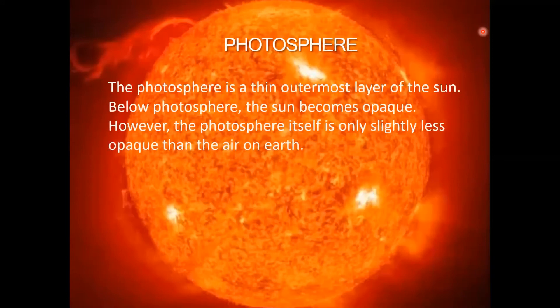Photosphere: the Photosphere is a thin outermost layer of the Sun. Below the Photosphere, the Sun becomes opaque. However, the Photosphere itself is only slightly less opaque than the air on Earth.